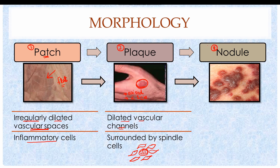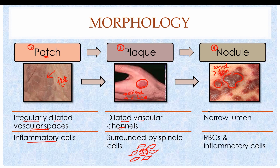The third and final stage is the Kaposi Sarcoma nodule. These are raised nodules greater than 1 cm in size. The nodules can often be ulcerated. They have a narrow lumen and, along with spindle cells, contain red blood cells that have extravasated from the blood vessels.